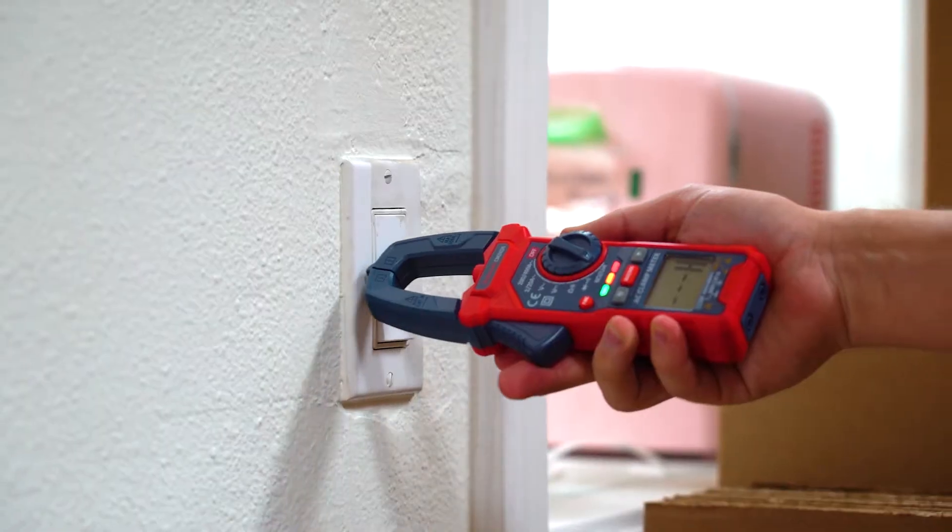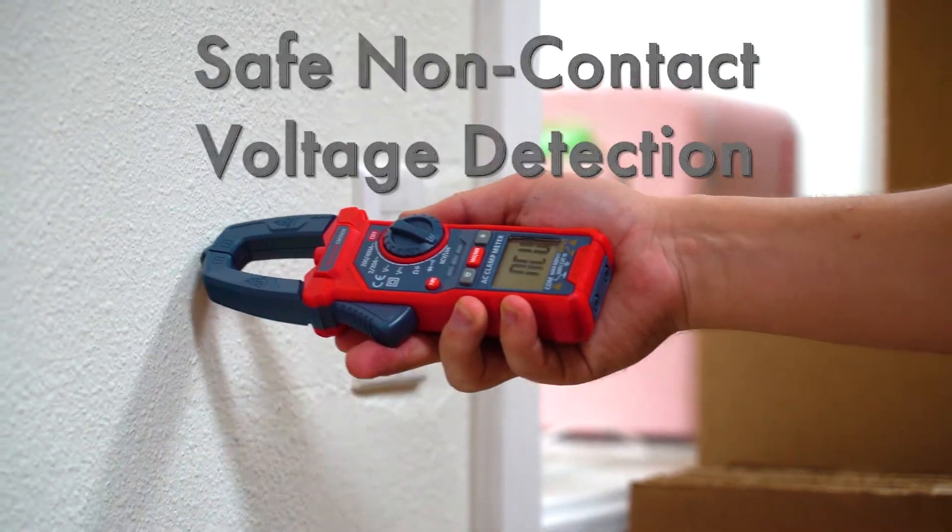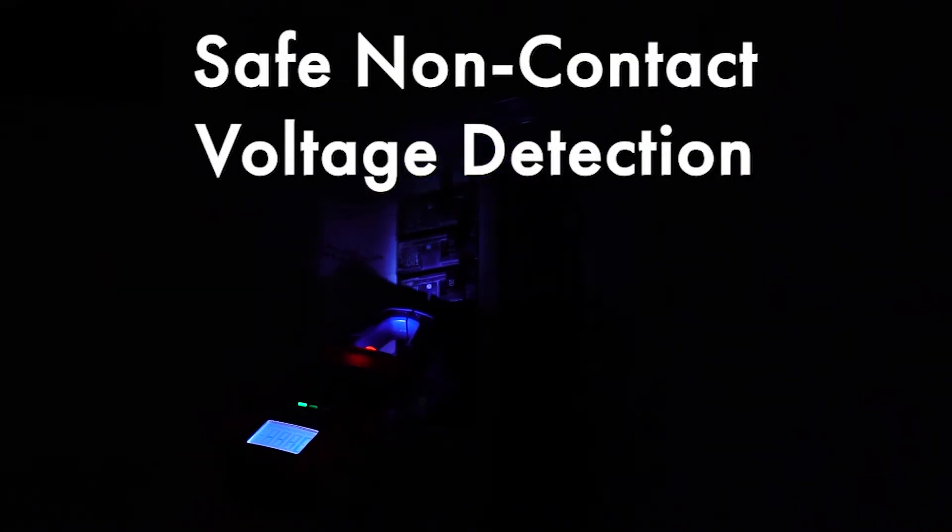The clamp multimeter also has non-contact voltage detection that beeps and lights up to check for live wires.